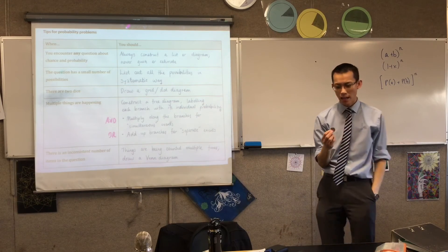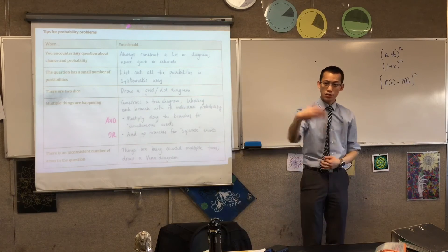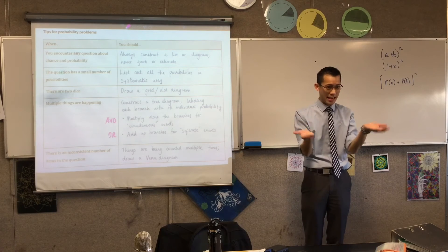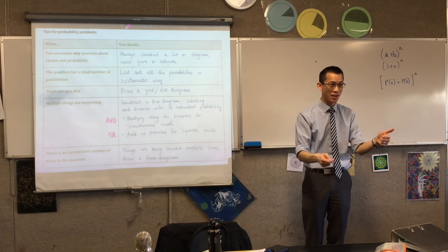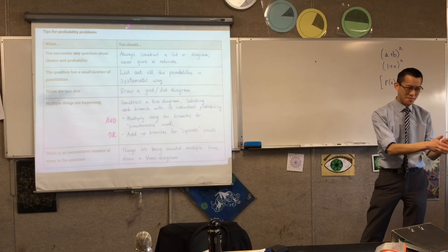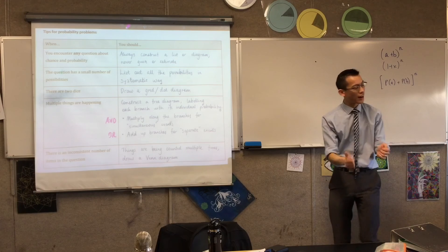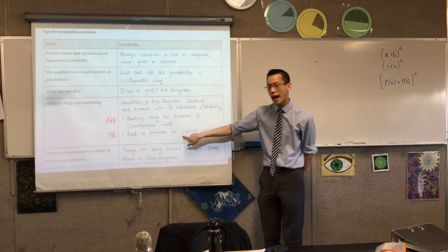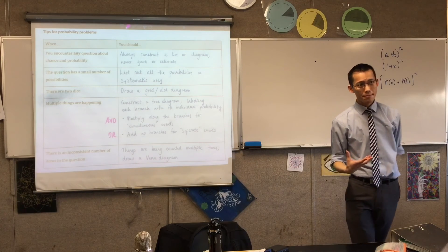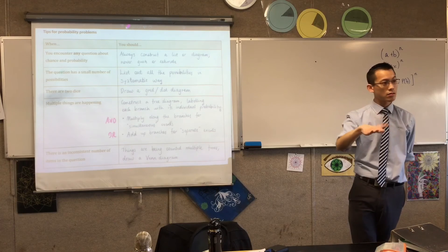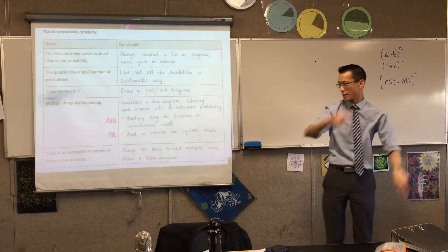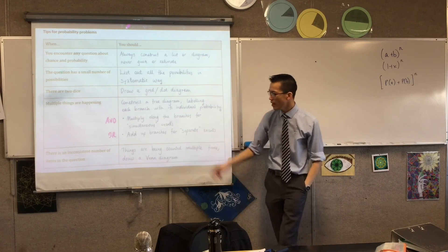So what's a separate event? A separate event might be flipping two heads, or flipping two tails. They can't happen at the same time. I can't have two heads and two tails with two coins. So that's why it's like this or that, and you'd add up. So a question might be, what's the probability of flipping the same face twice when I flip two coins? And it'd be like, well, heads-heads, or tails-tails. And I'm going to add those up. Does that make sense?